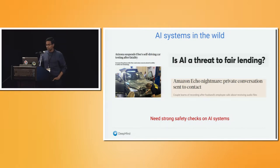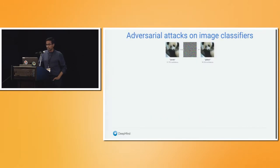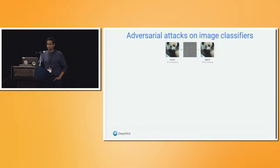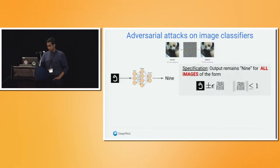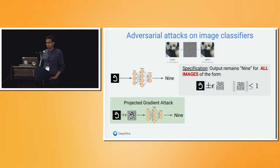This means we need much stronger safety checks on our AI systems to make sure they behave well under all possible situations. One canonical example of how AI systems fail is adversarial examples. Deep learning has made significant advances in object recognition and classification, but these classifiers have been shown to be vulnerable to specifically chosen noise perturbations that cause the classifier to assign a different label with very high confidence.